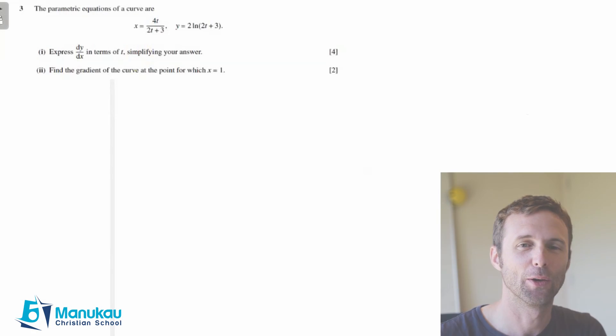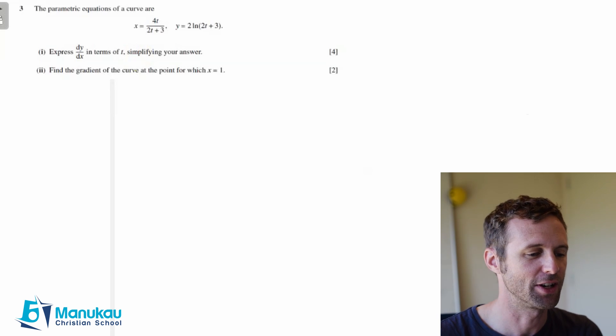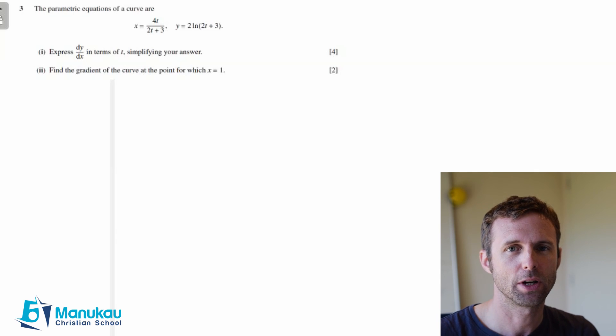Hey, welcome! So we're doing another holiday question, this time focusing on parametric differentiation. We have parametric equations of a curve: x equals 4t over 2t plus 3, and y equals 2 ln(2t plus 3). We're first being asked to express dy/dx, the gradient function, in terms of t, simplifying our answer.